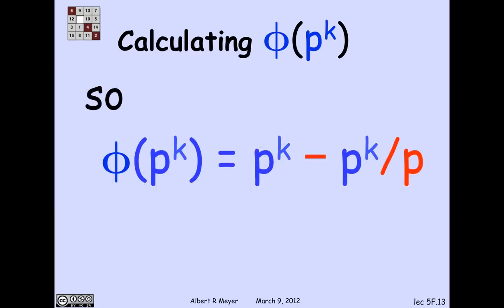Which means that phi of p to the k is the good ones minus 1 p-th of p to the k. Namely, phi of p to the k is p to the k minus p to the k over p, which can also be expressed in a more standard form, p to the k minus p to the power k minus 1. And that knocks off the story of phi of p for powers of primes.